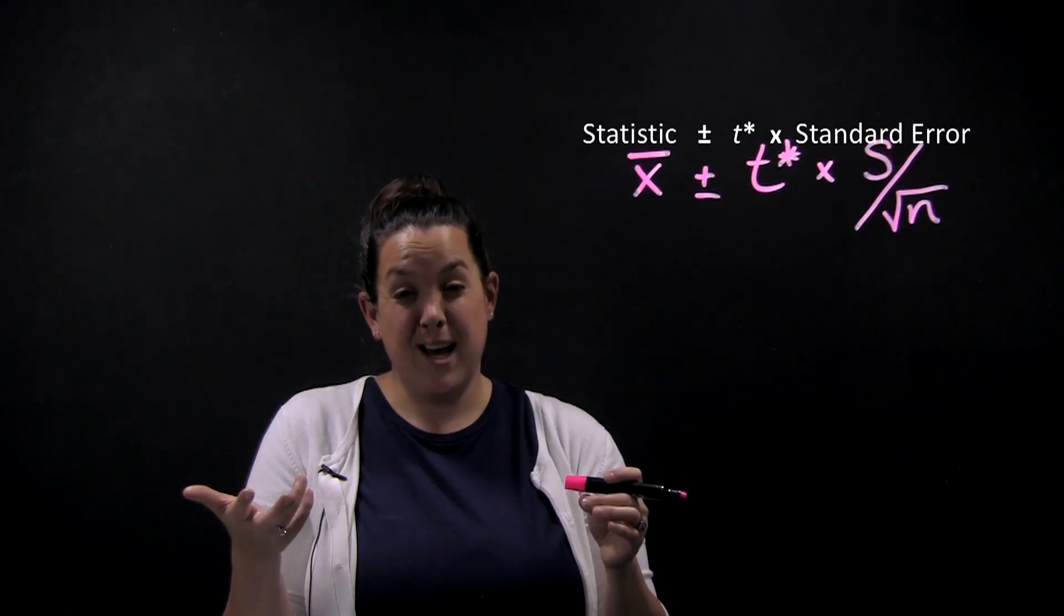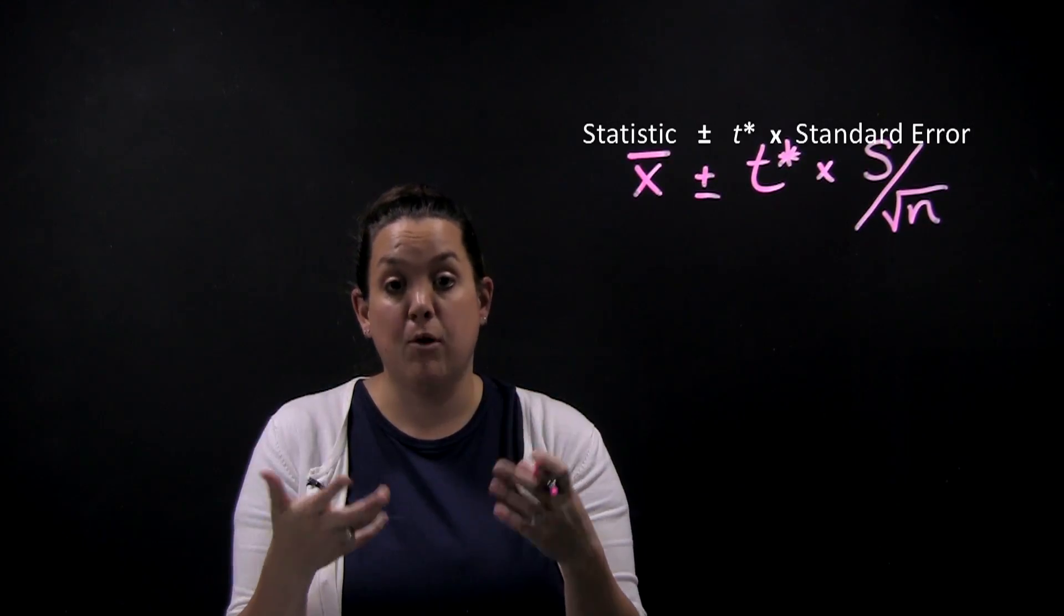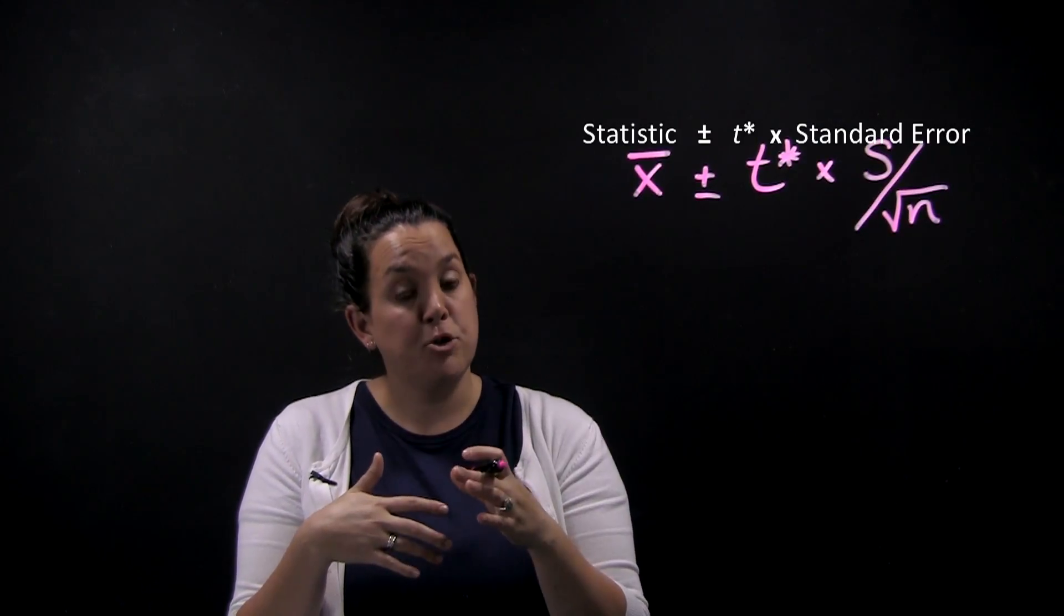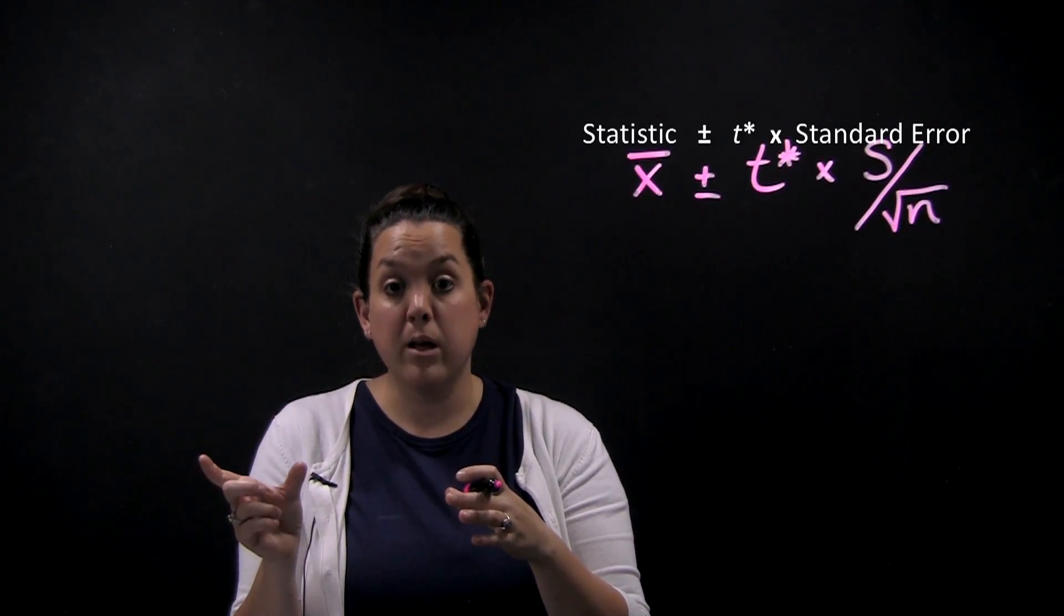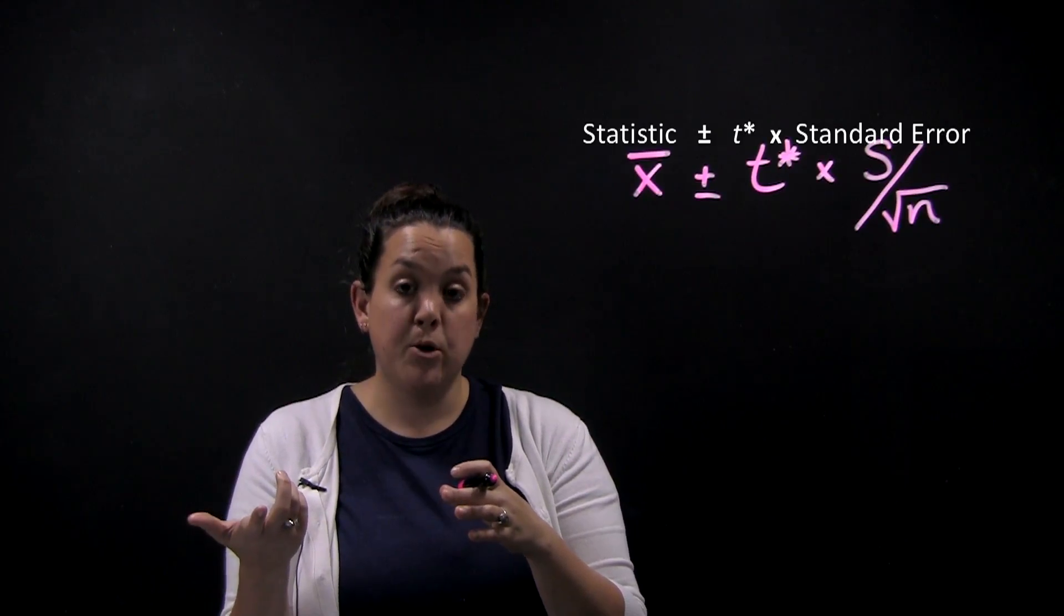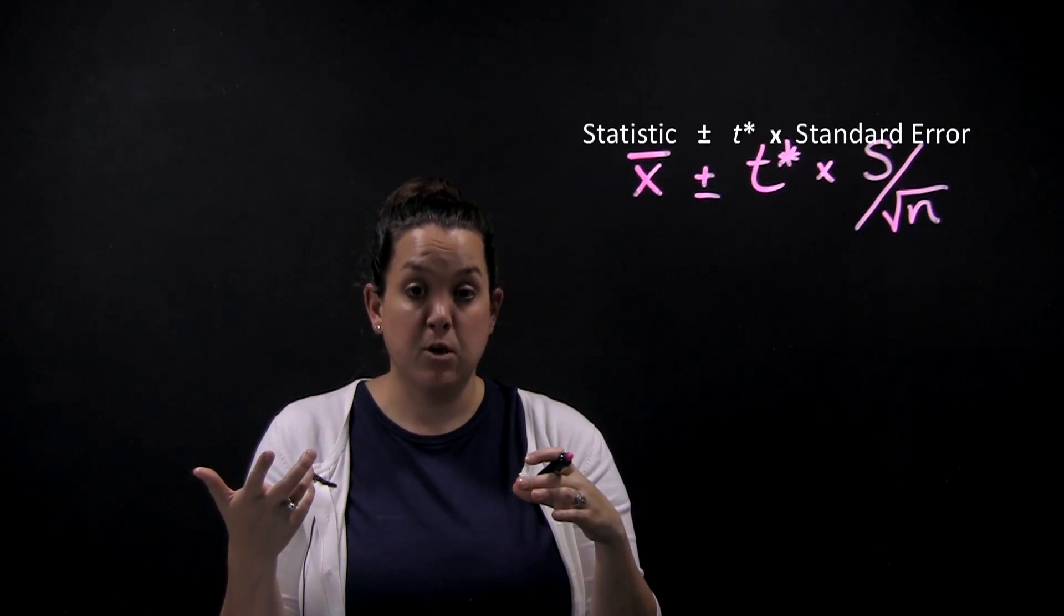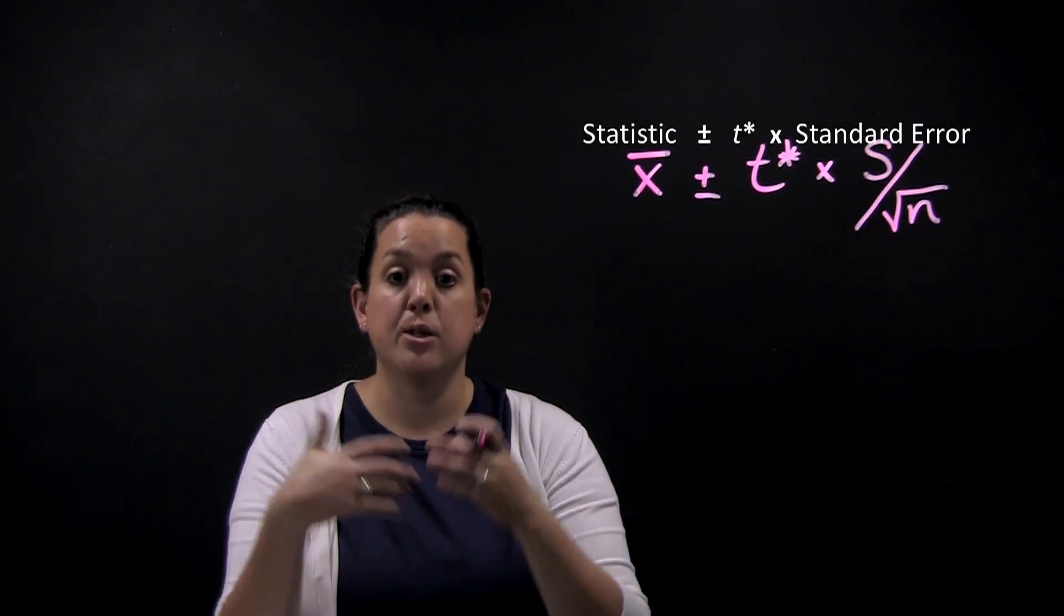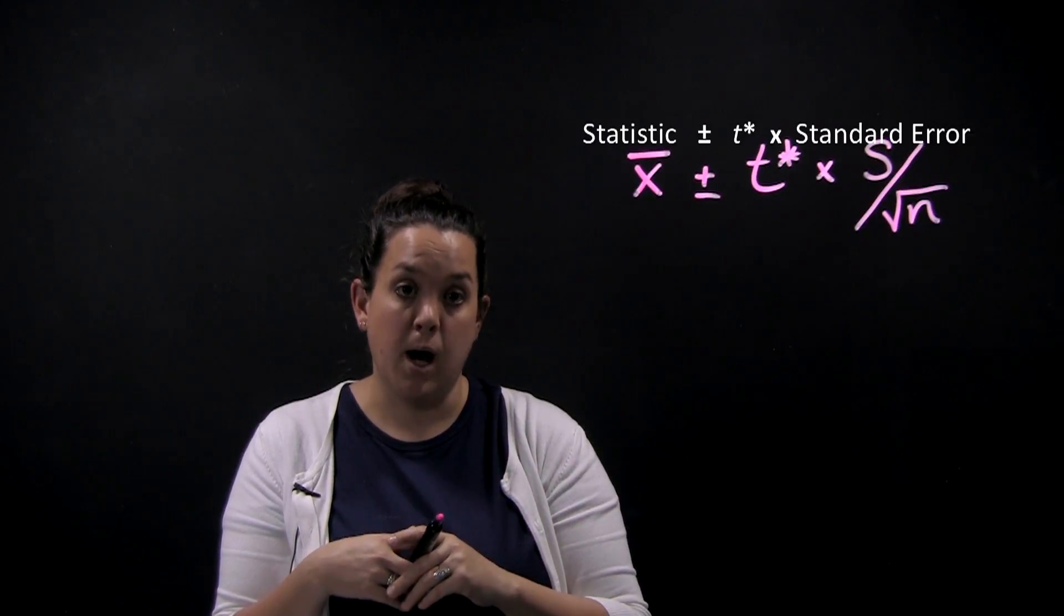So for example, if I had a 95% confidence interval, 95% would be my confidence level, or how confident I am in the procedure that I used. And remember from chapter 2 that 95% means that 95% of the intervals calculated will contain the parameter of interest, and 5% then will not. So here, because our parameter of interest is mu, if I had a 95% confidence interval, 95% of the intervals would contain mu, whereas 5% would not.